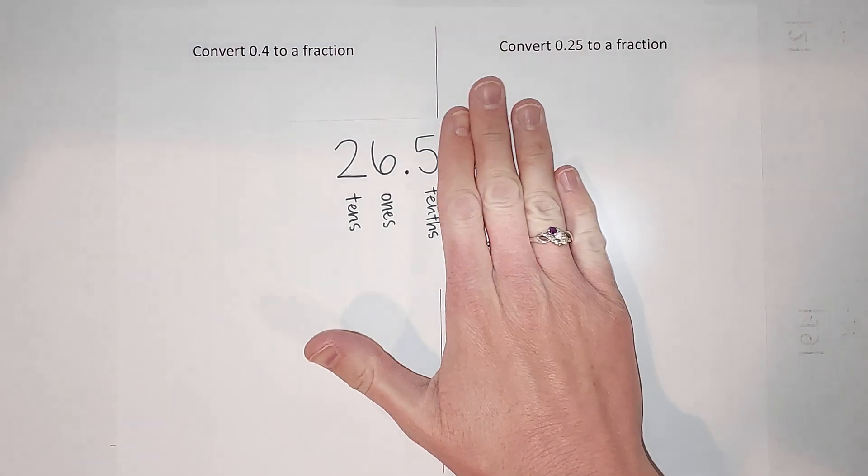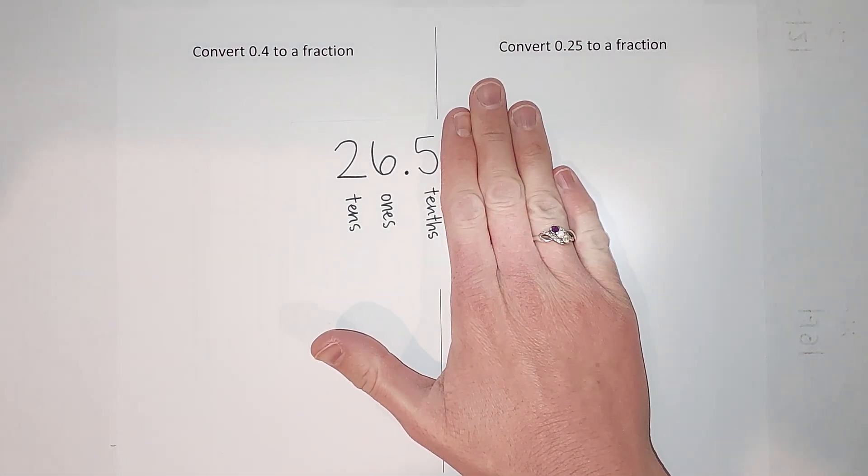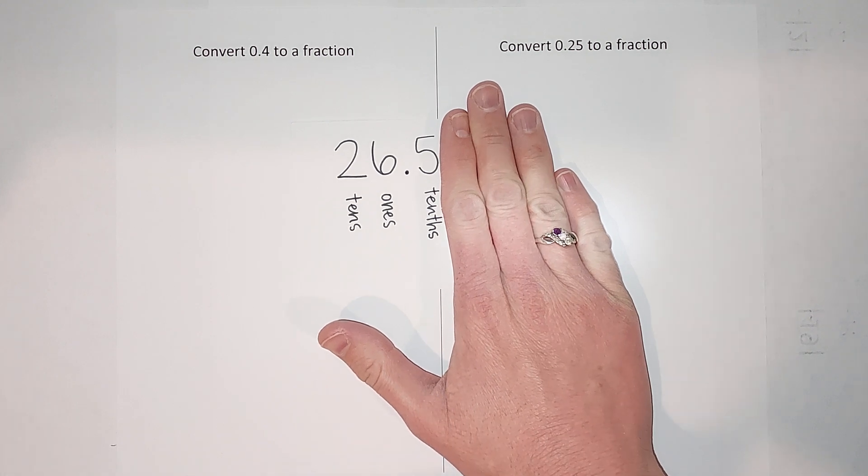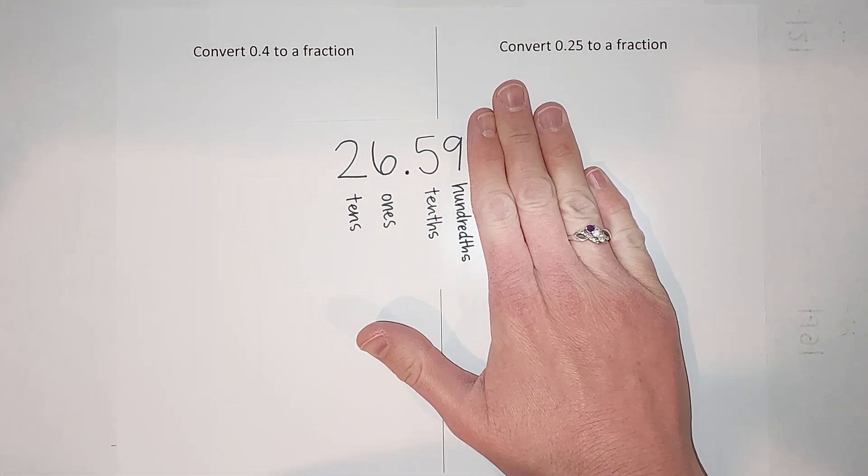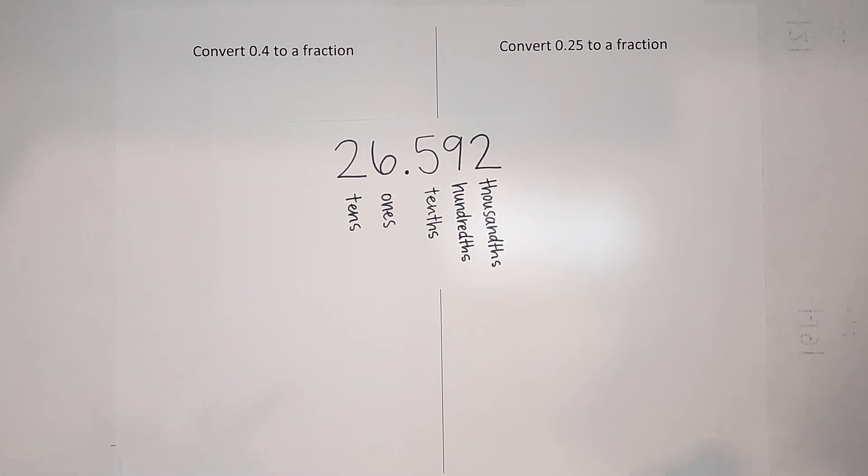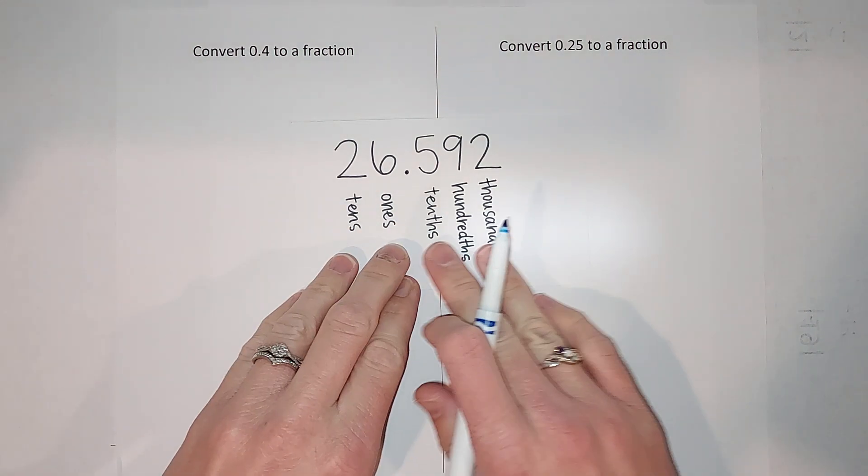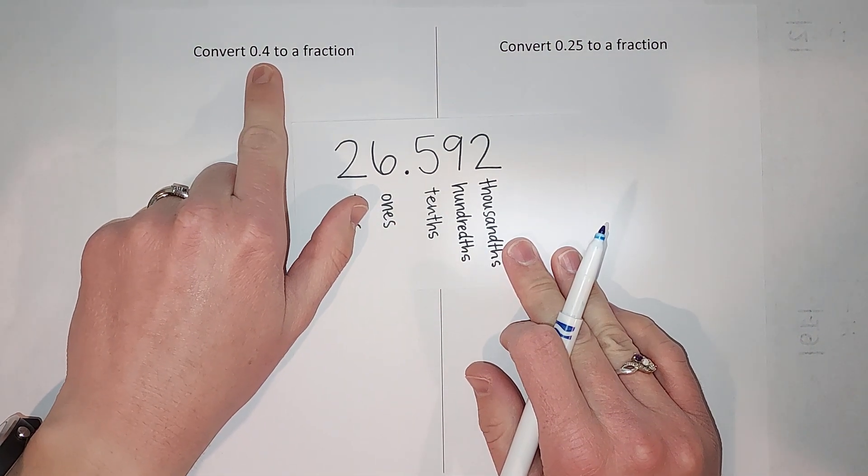So if this were just 26.5, you would read that as 26 and five tenths. 26 and 59 hundredths. You probably get the idea. So basically following this, if I were to read this, it would be